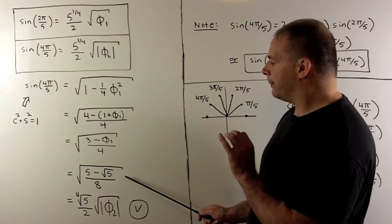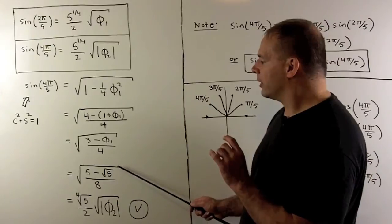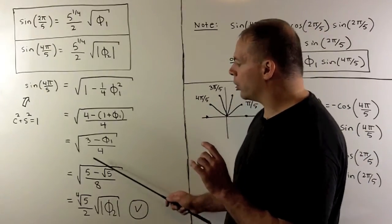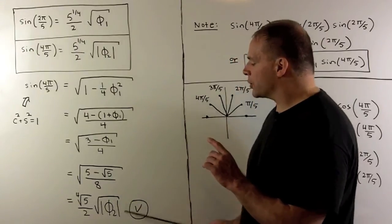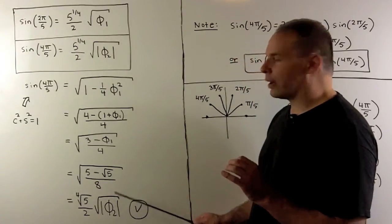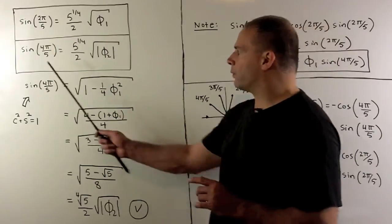When I get to this step, we can factor out the square root of 5 from the bigger square root to get a fourth root of 5. Then what's left over is going to be the square root of the absolute value of φ₂. And that's our formula.